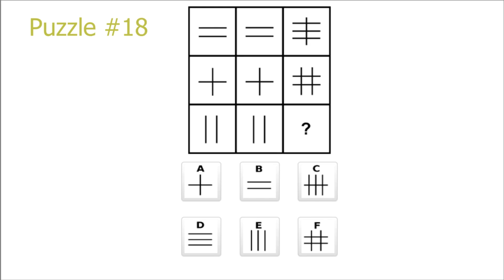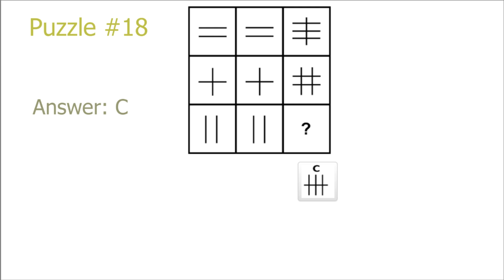Puzzle 18. In this puzzle, we see that there is a repetition in the columns, so we know we shouldn't base ourselves on the columns. Going by the rows, we see that moving down one row leads to a horizontal line transitioning into a vertical line. This is consistent for every picture in every row, so we know our answer is picture 8 with one horizontal line swapped out for a vertical line. Our answer is C.